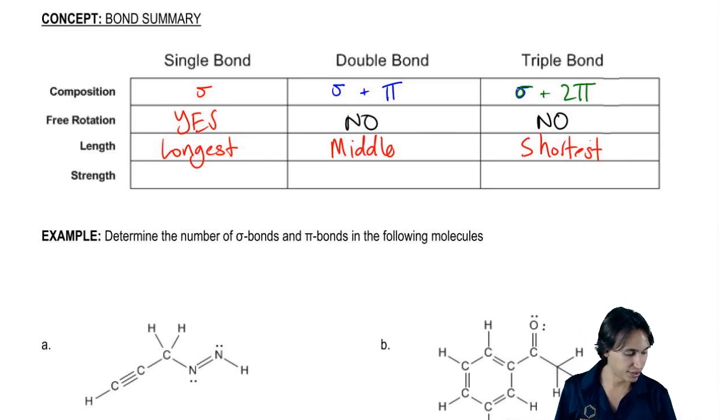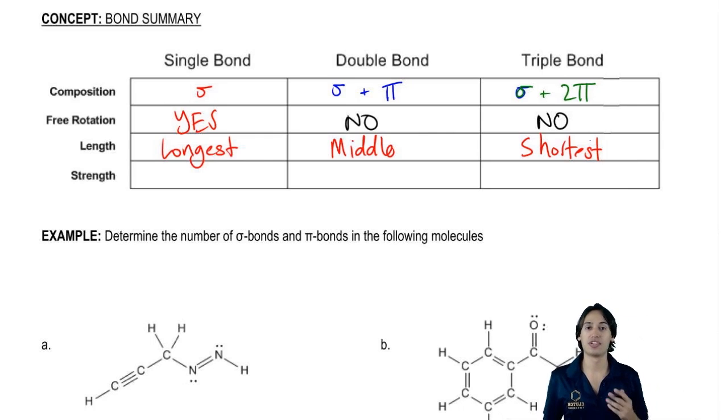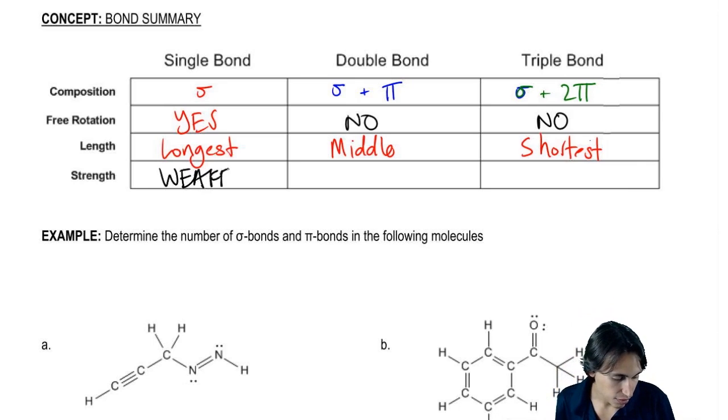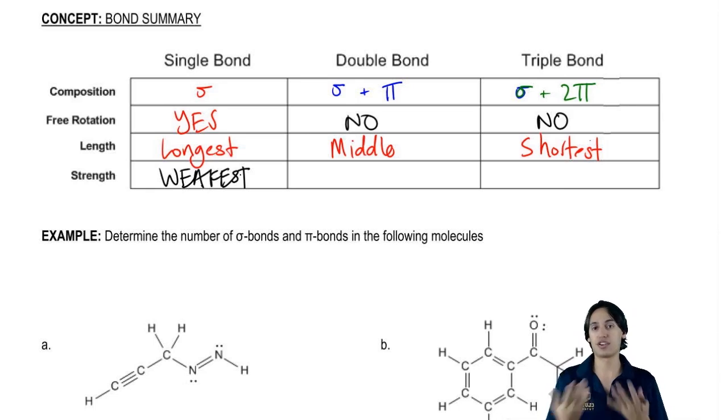Now let's go on to strength. I already talked to you guys about this earlier. Which of these is going to be the weakest overall in terms of single, double, or triple? And the answer is that the single bond is the weakest. The reason for that is there's only one region of overlap that is saving energy.